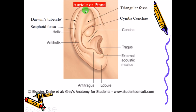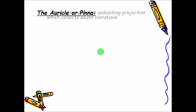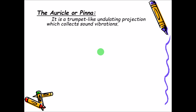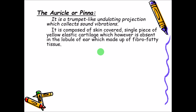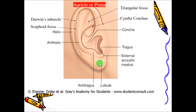The auricle or pinna is trumpet-shaped and collects sound vibrations or sound waves. It is covered by skin, and inside you can see the yellow elastic cartilage — that is why it is flexible and will come back to its normal position and shape when twisted. However, this elastic cartilage is absent in the lower part, that is the lobule, which is called the lobule.